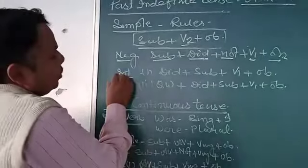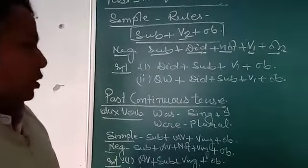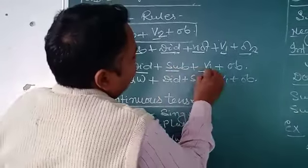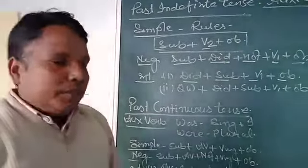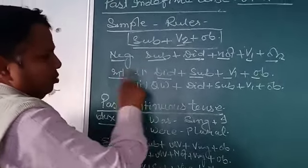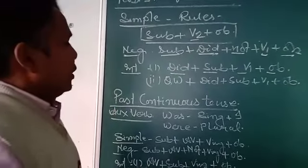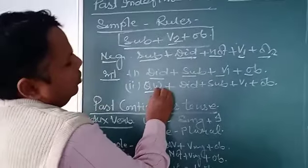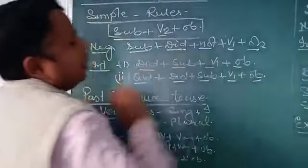For the interrogative form, the sentence starts from the auxiliary verb 'did,' followed by subject, then verb base form plus object. If any activity is being asked about the subject by a noun, that noun part comes first and then the rest follows. This is past indefinite tense.